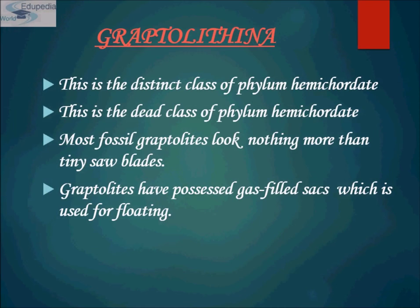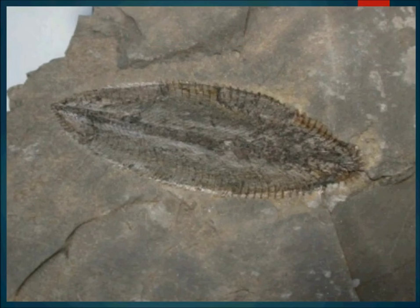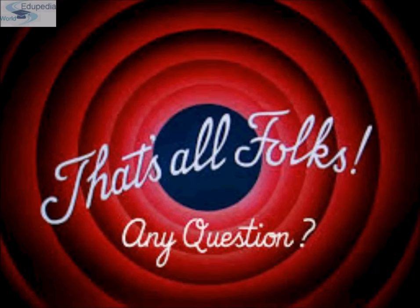The fourth class is the extinct class of Phylum Hemichordata — the Graptolites. Most fossil graptolites look nothing more than tiny saw blades. Graptolites possessed gas-filled sacks used for floating. This concludes the topic. In the next session we will be discussing Phylum Chordata, so stay tuned. Thank you.